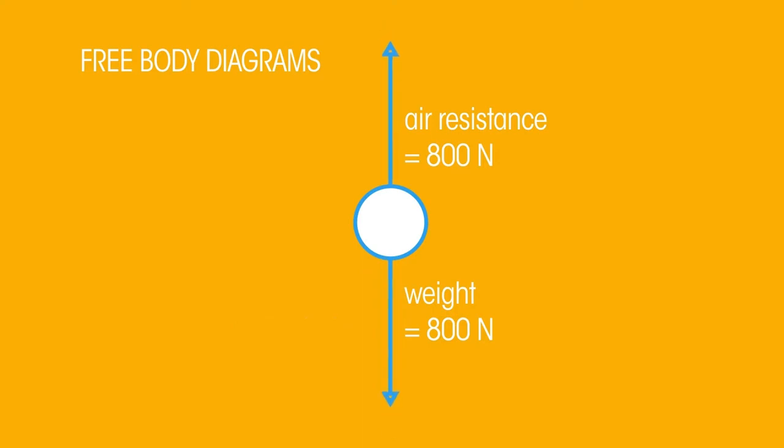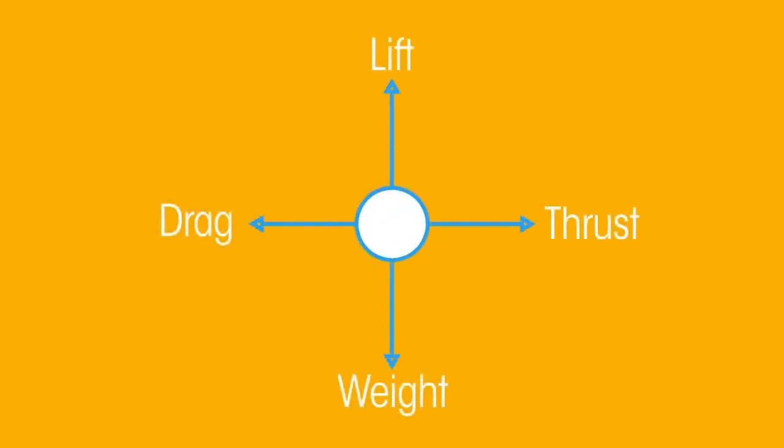Here is a free body diagram for an aeroplane travelling at a constant velocity and a constant altitude. The weight of the aeroplane is acting downwards towards the Earth. The force of the lift acts upwards. The plane is travelling at a constant altitude, so the magnitude of the lift and weight forces must be equal. The force of thrust pushes the aeroplane forwards. But the plane is travelling at a constant velocity, so the magnitude of the drag and thrust forces must be equal.